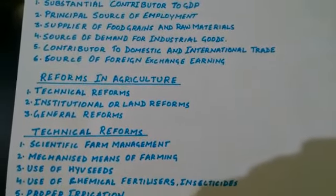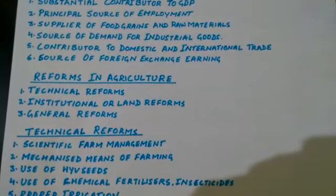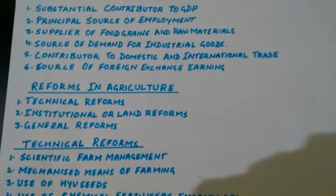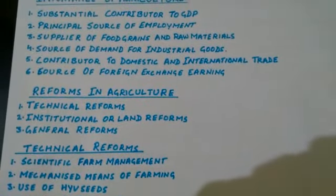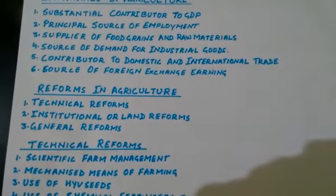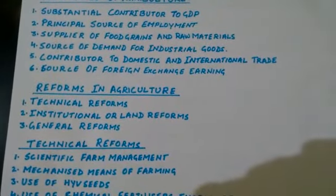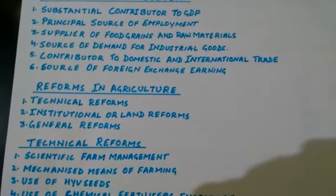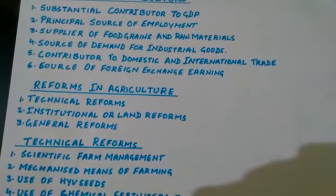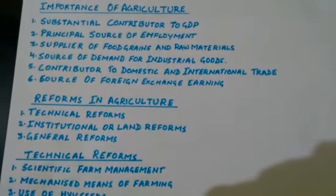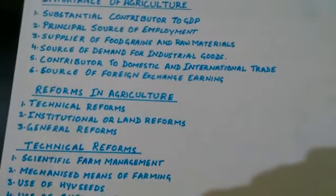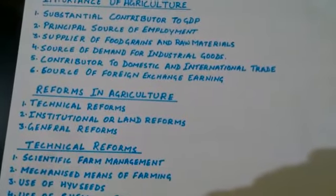Next, agriculture is important because it contributes to domestic and international trade. Domestic means trade within the country — agricultural products produced in one region are transported to other regions. For international trade, India exports food grains as well as various agricultural products to other countries of the world.